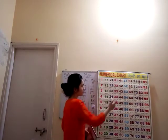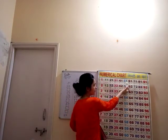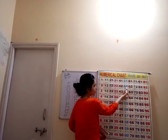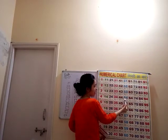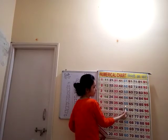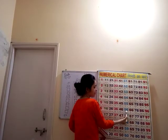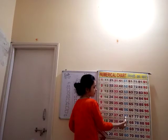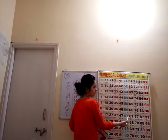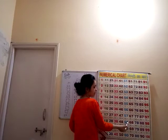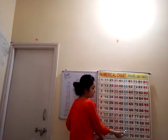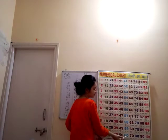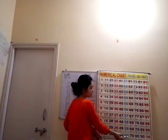50 ke bad? 5, 1, 51. 5, 2, 52. 5, 3, 53. 5, 4, 54. 5, 5, 55. 5, 6, 56. 5, 7, 57. 5, 8, 58. 5, 9, 59. 59 ke bad kya atar? 6, 0, 60.